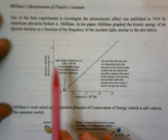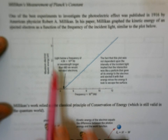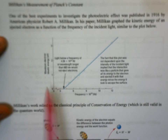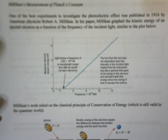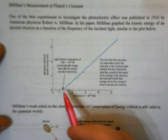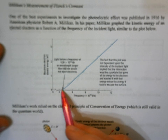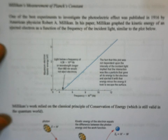What he was getting is a plot that looks like this. We have energy on the y-axis, frequency on the x-axis. We get a roughly linear plot, and we notice it has an x-intercept. We're going to talk about what all of these mean momentarily.